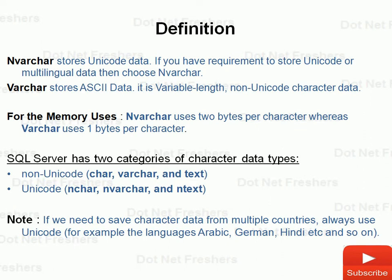SQL Server basically categorizes character data storage into two categories: non-Unicode and Unicode. In the non-Unicode category, there are CHAR, VARCHAR, and TEXT data types. In the Unicode category, there are NCHAR, NVARCHAR, and NTEXT data types.